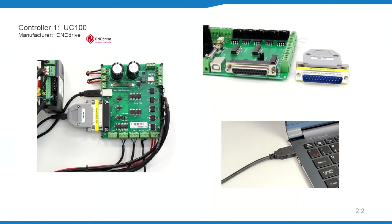The UC100 is easiest to incorporate as it plugs directly into the DMB breakout board. Connect the UC100 into the breakout board, then connect the UC100 to the PC using the USB cable provided. Note that the breakout board still needs a 5V and 24V power supply. The DMB breakout board's parallel port connector is female, so you use a male DB25 pair to connect to the UC100.